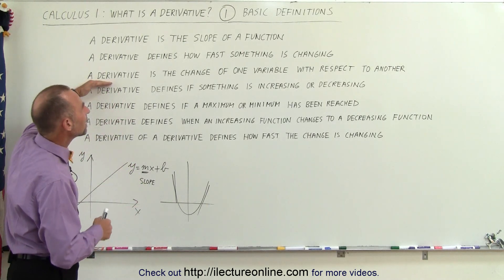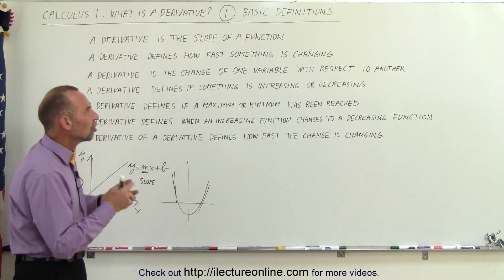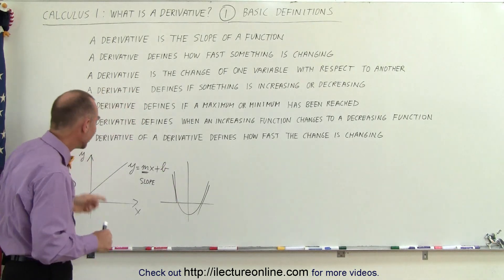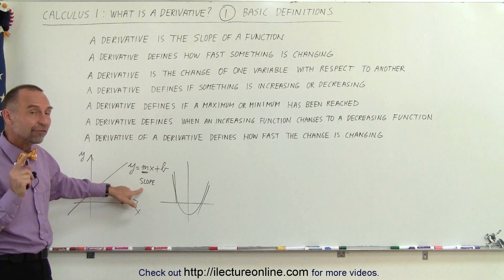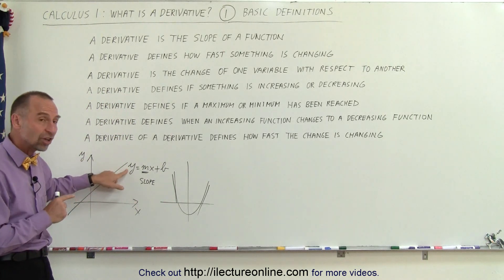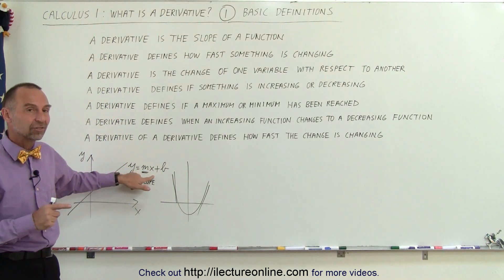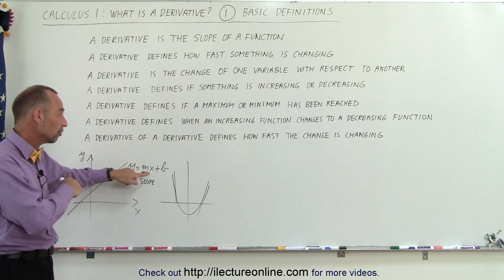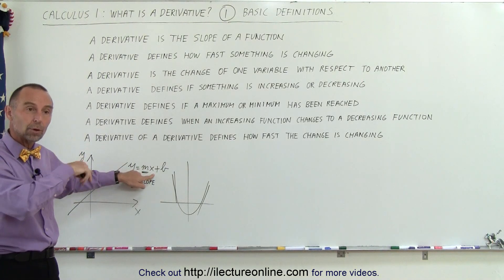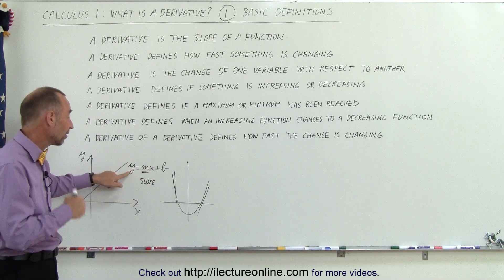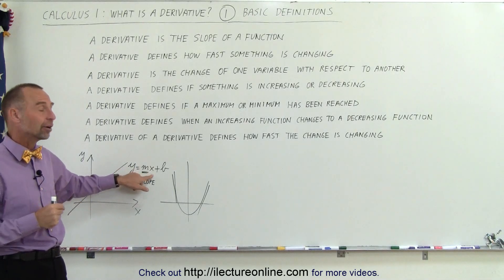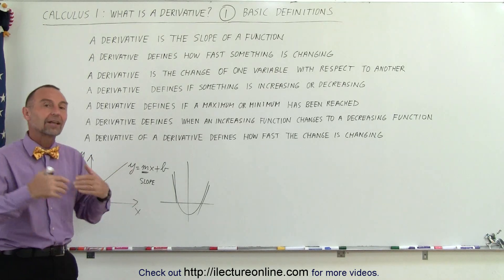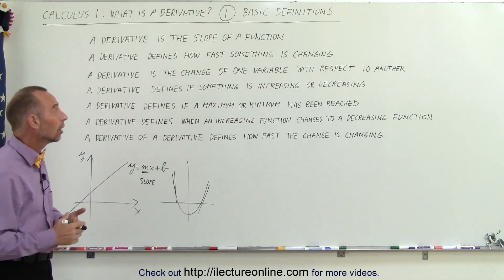A derivative can also be defined as the change of one variable with respect to another. For example, the slope defines how fast y is changing with respect to x. So we want to find how fast the function y is changing with respect to what we call the independent variable. Y is the dependent variable, x is the independent variable, and we define the change in y with respect to x. That's another way in which we can define a derivative.